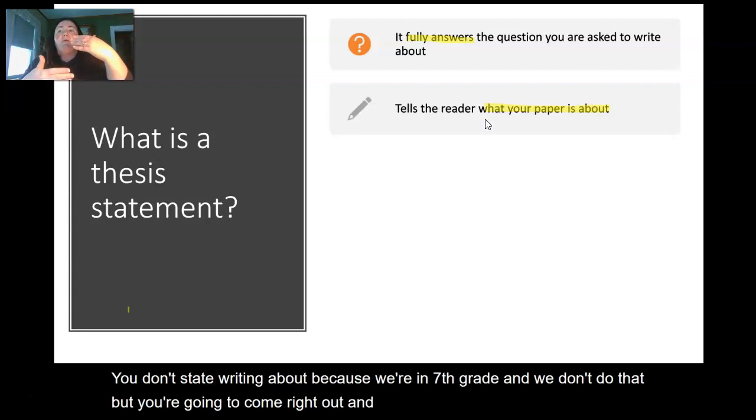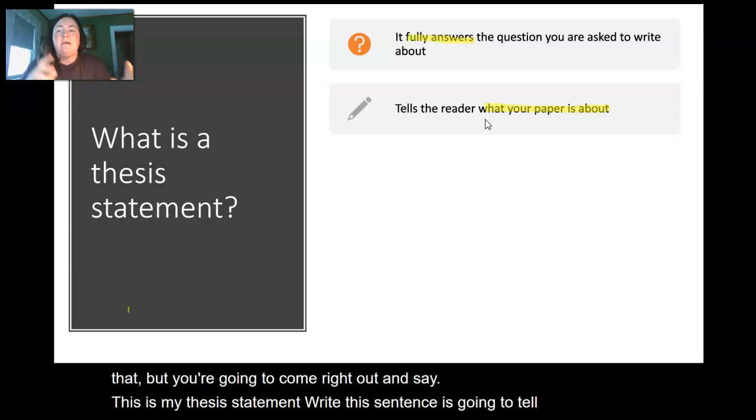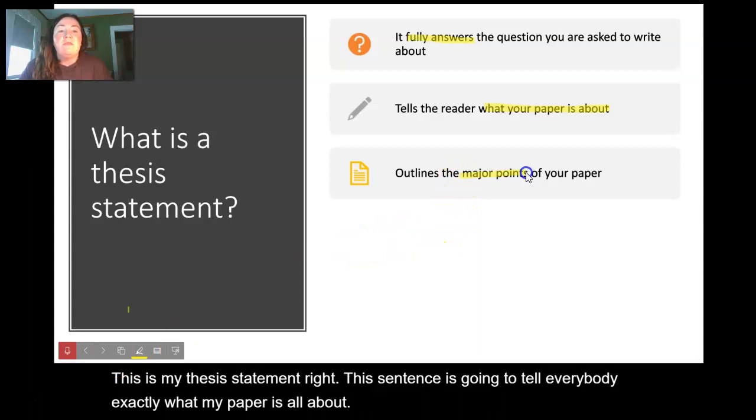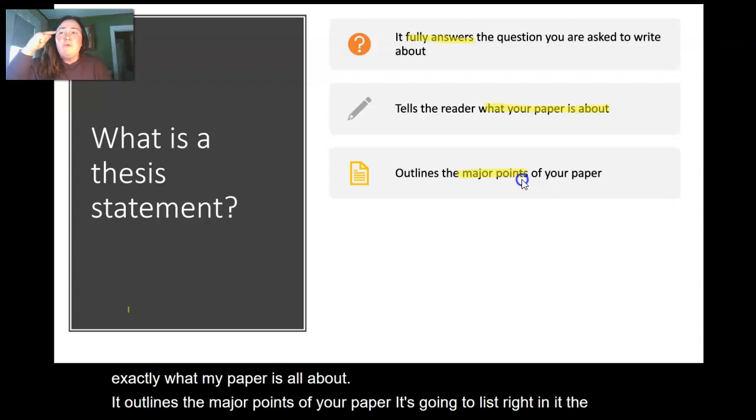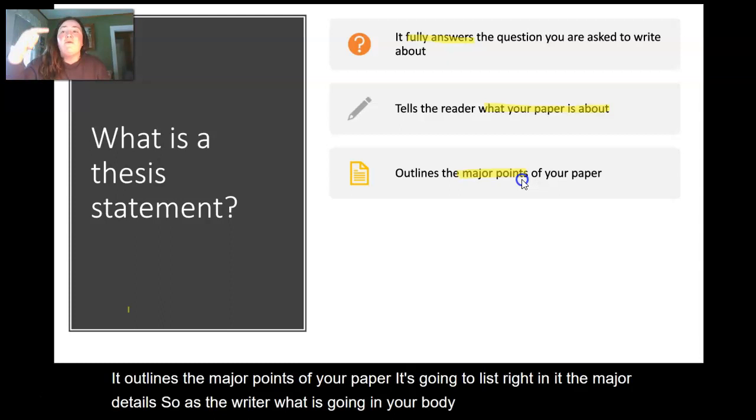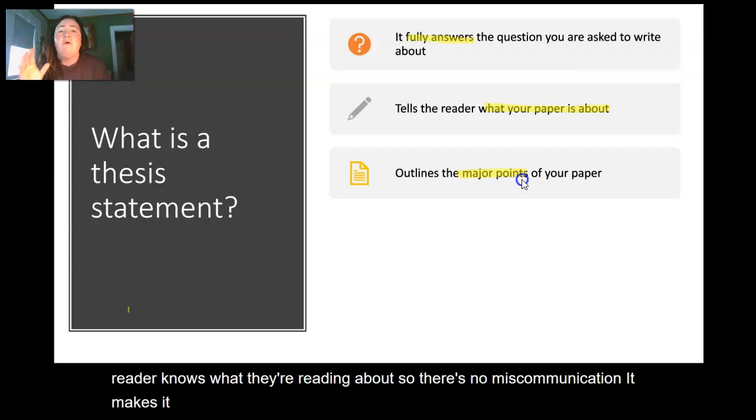It tells the reader what your paper is about. You don't state 'I'm writing about' because we're in seventh grade and we don't do that, but you're going to come right out - this sentence is going to tell everybody exactly what my paper is all about. It outlines the major points of your paper. It's going to list right in it the major details so you know as the writer what is going in your body paragraphs and your reader knows what they're reading about, so there's no miscommunication.